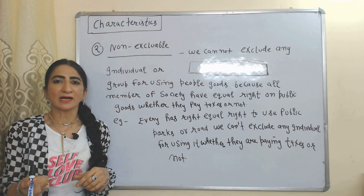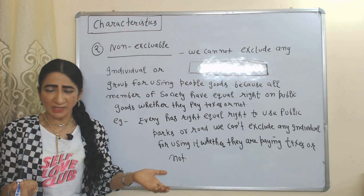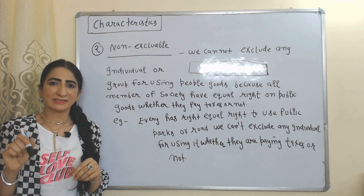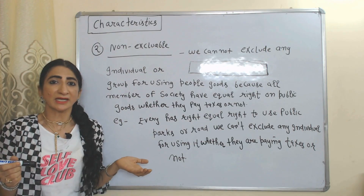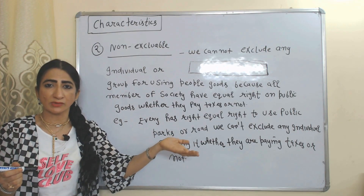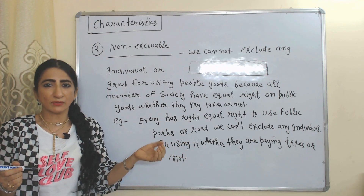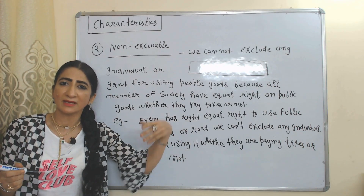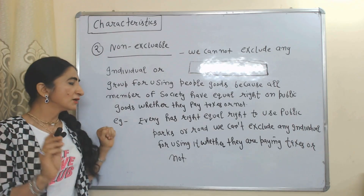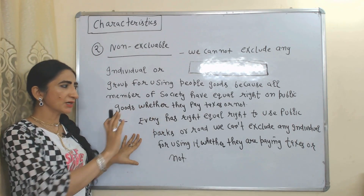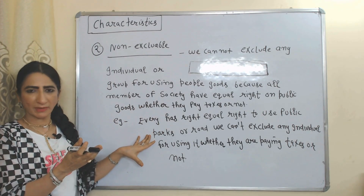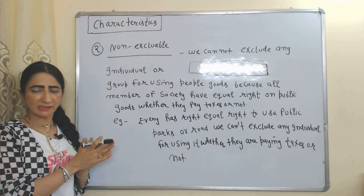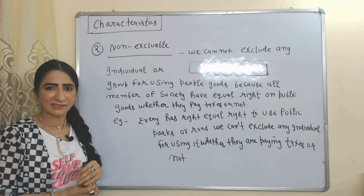The next characteristic is non-excludable. Non-excludable means we can't exclude any individual or group from using public goods. We can't prevent anyone from using public goods because all members of society have equal right to public goods, whether they are paying taxes or not. For example, everyone has equal right to use a public park or public road.